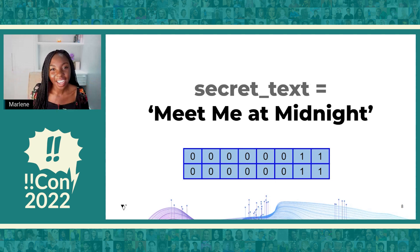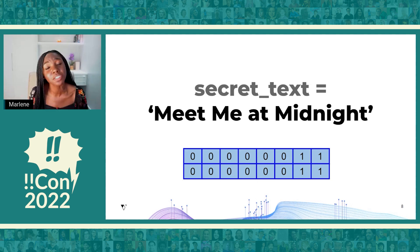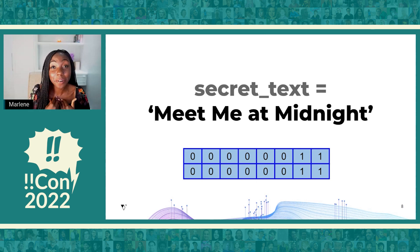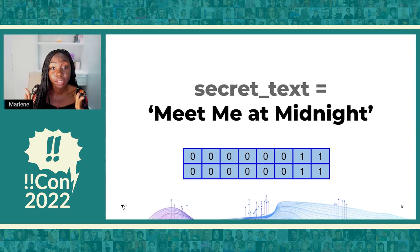Now that we understand how computers store things, let's get back to the task at hand — we are on our way to impressing our beloved crush. The next thing we want to do is decide on the secret message we're going to send. I've chosen to let our crush know that they should meet us at midnight. This is also a great test for your relationship, because on average most people are asleep by 10:30. If your crush actually gets out of bed and meets you at midnight, that's a clear sign they're interested in you. And just as with our cover audio, this line of text will be stored in our computer's memory as a specific sequence of zeros and ones.